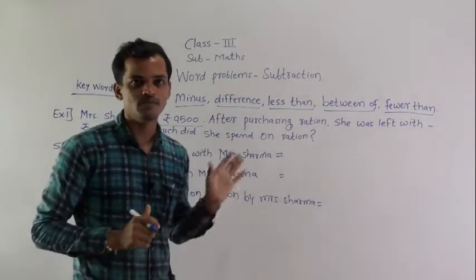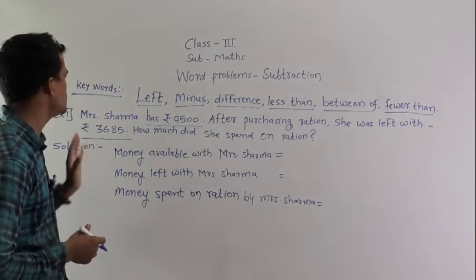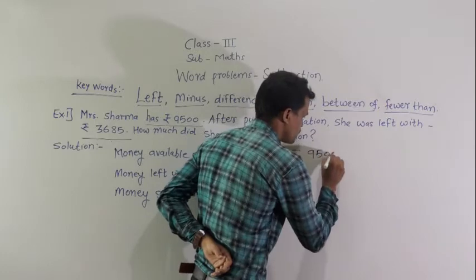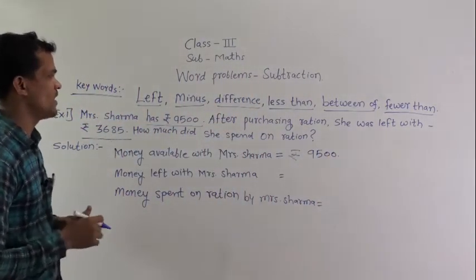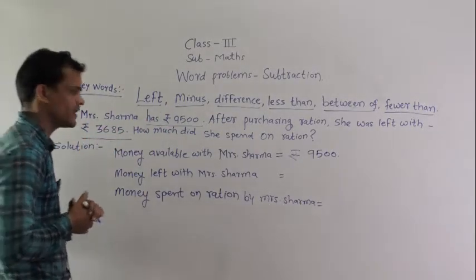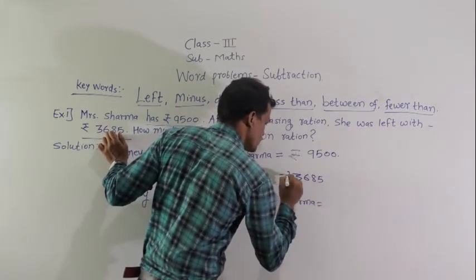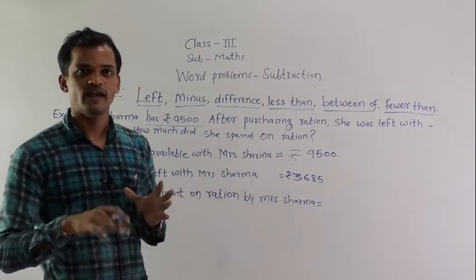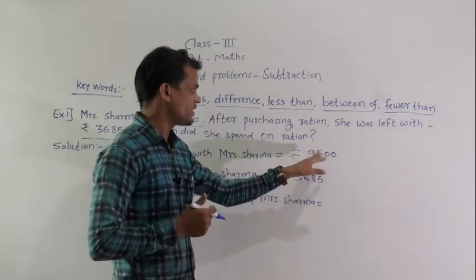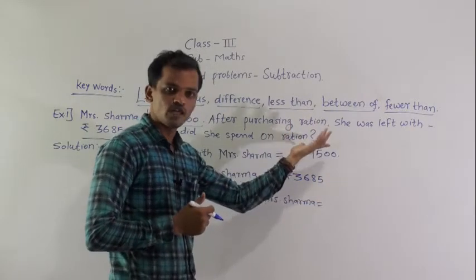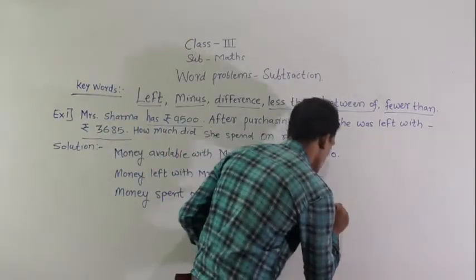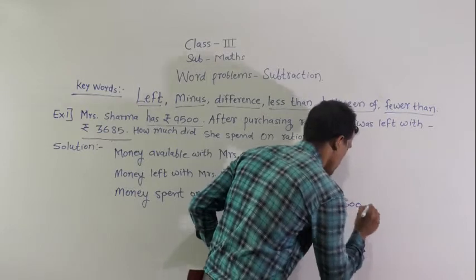Write the solution. Money available with Mrs. Sharma: rupees 9500. Money left with Mrs. Sharma after purchasing ration: rupees 3685. What we have to find is the money spent on ration by Mrs. Sharma. When you subtract 3685 from the total money, you will get the answer. Money spent on ration = rupees 9500 minus rupees 3685.